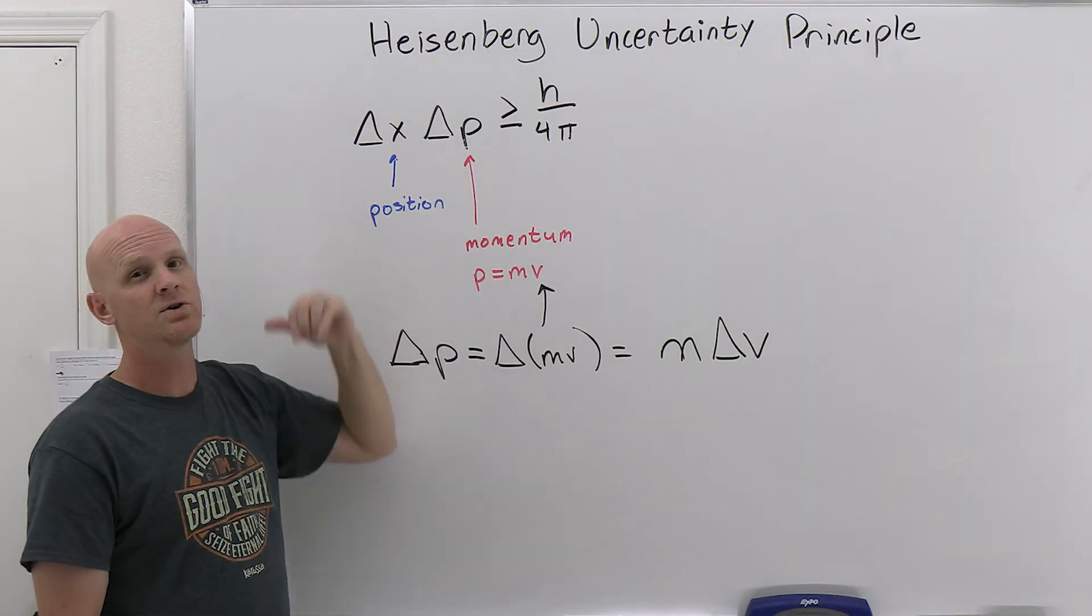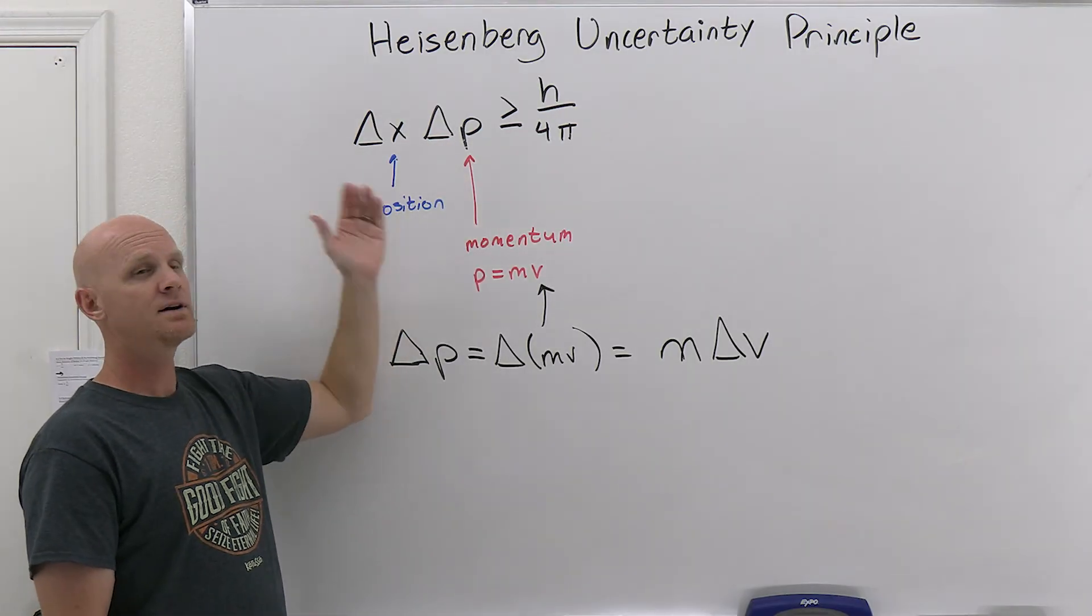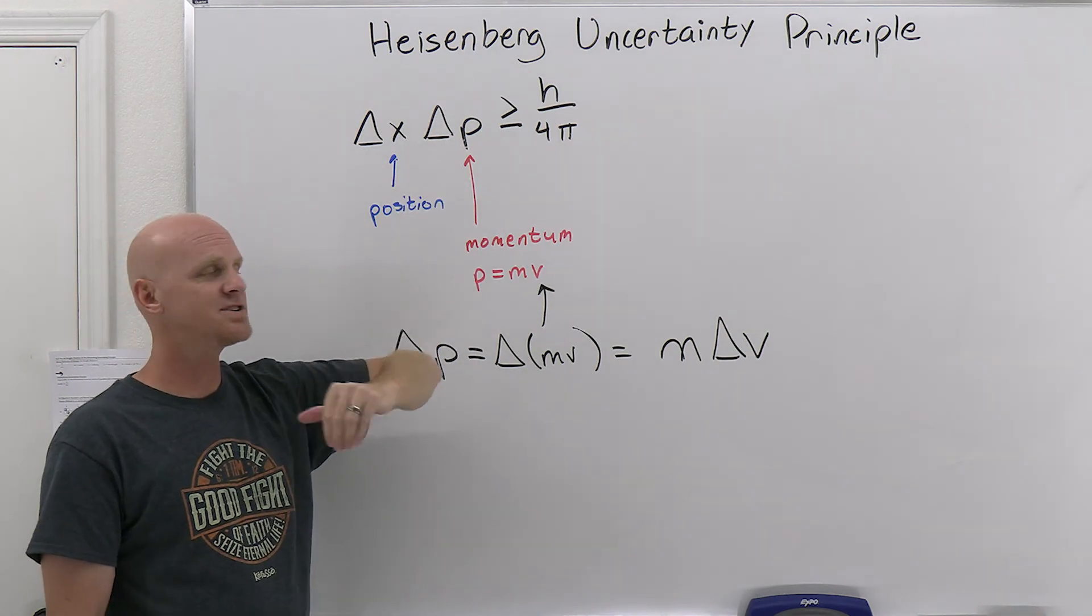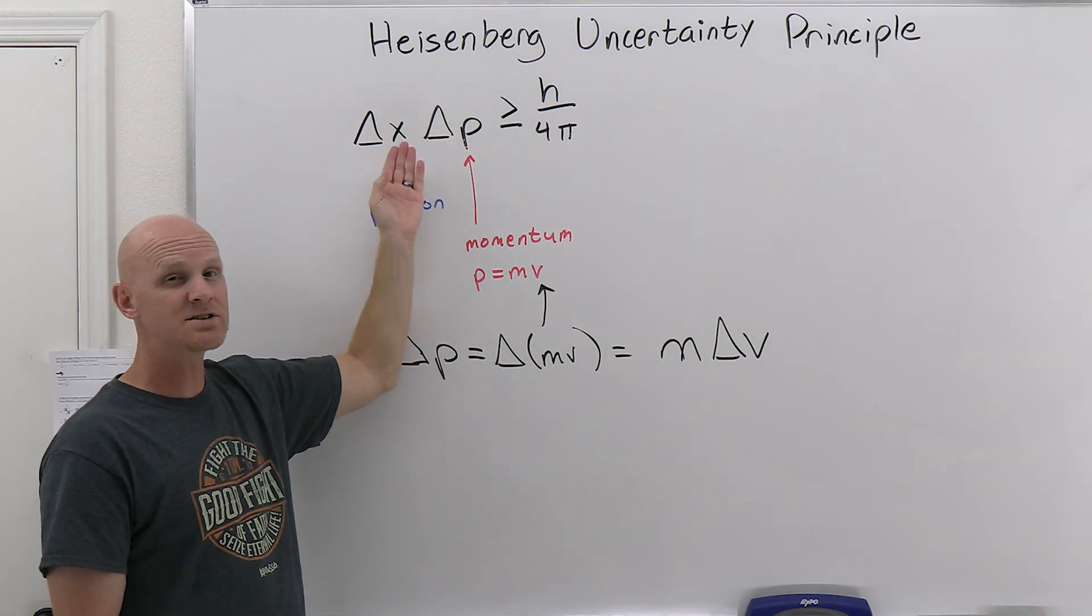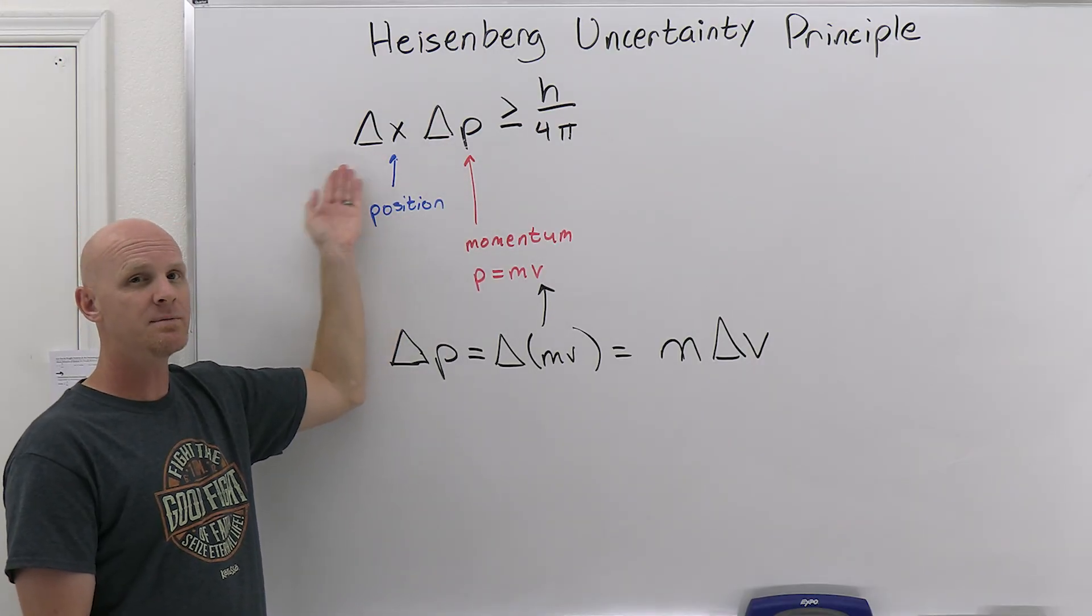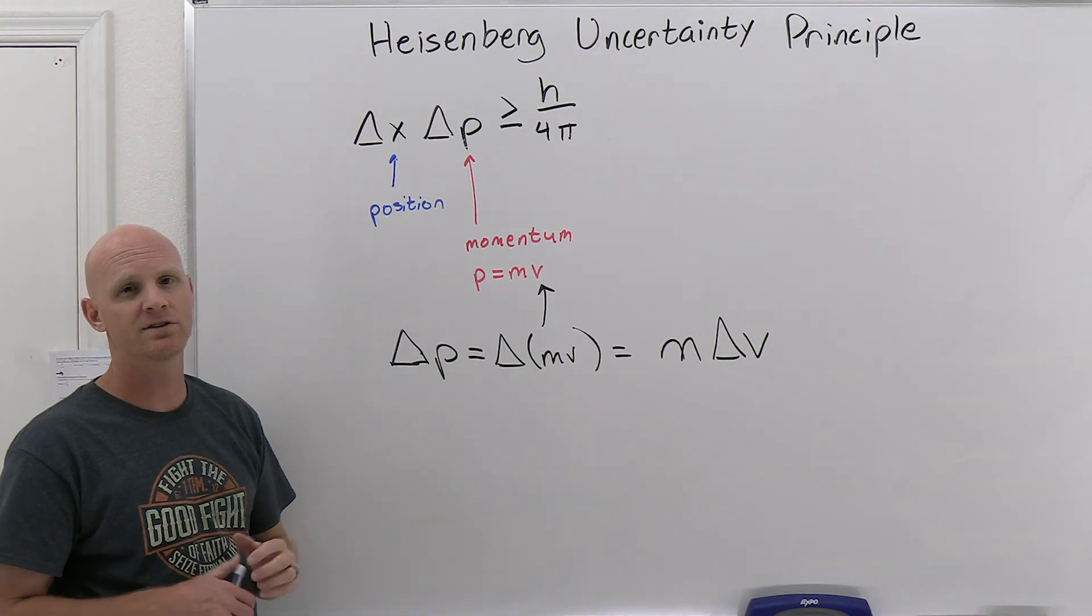And then once you know the change in momentum, you could then figure out what the minimum, and I shouldn't say change in momentum, uncertainty in momentum. Delta usually means change. But in this case, it means uncertainty in momentum. You could take that uncertainty in momentum and use it to calculate the minimum uncertainty in that electron's position.